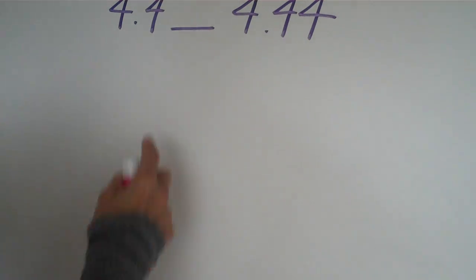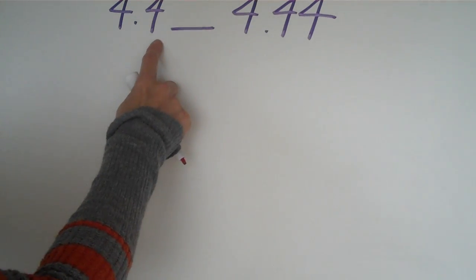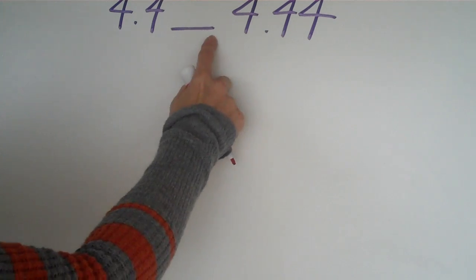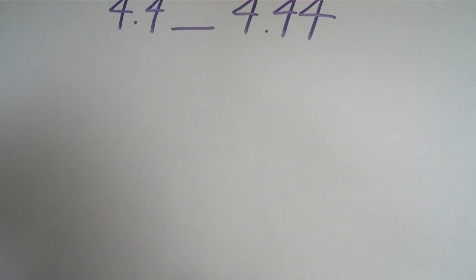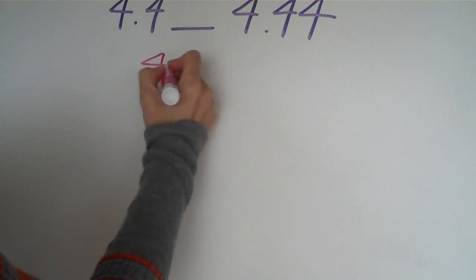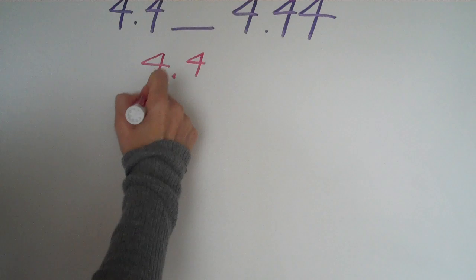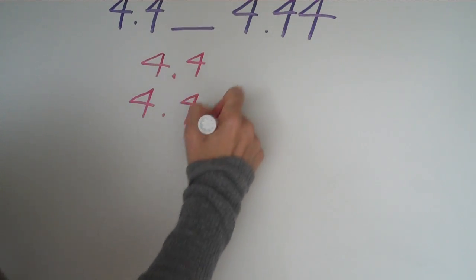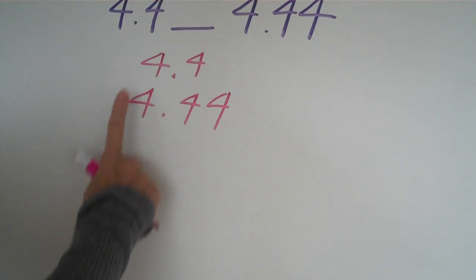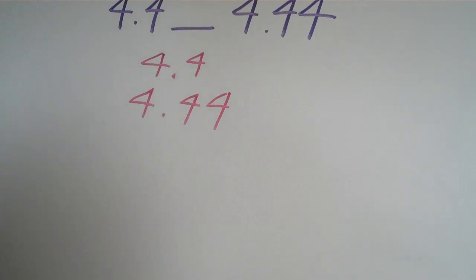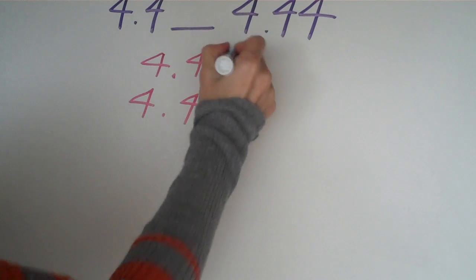Okay let's try another example. In this case we have 4.4. Is it less than or greater than or equal to 4.44? Well again we can rewrite this, 4.4 and then here's the other number 4.44. We're going to start from left to right. Well 4 is the same in the top and bottom. Again the 4s are the same in the top and bottom.